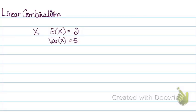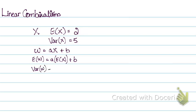So, linear combinations. Let's say I have a random variable x where the mean of x is 2 and the variance of x is 5. Now let's say I have a linear combination w equals ax plus b. The mean of w will simply be the mean of x times a, plus b. The variance of w will be a squared times the variance of x — you do not add the constant to the variance. So if calculating the mean, multiply by the coefficient and add any constant. For variance, square the coefficient and multiply by the variance — no constants are added.